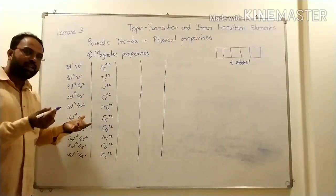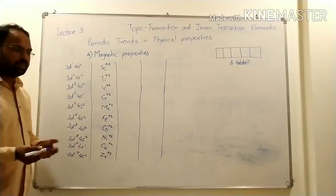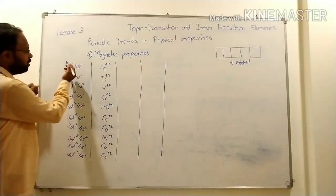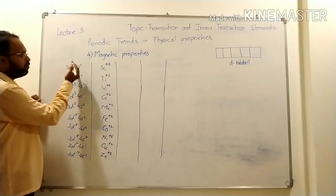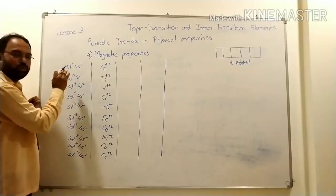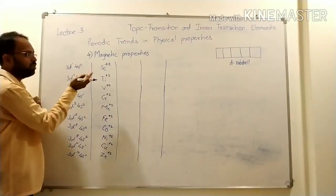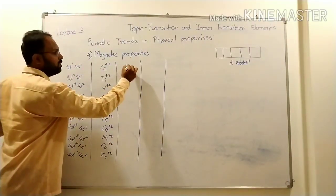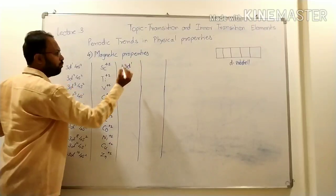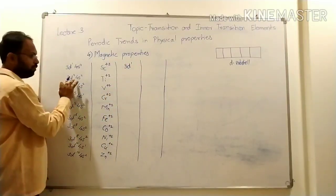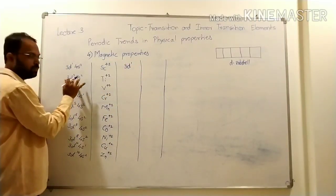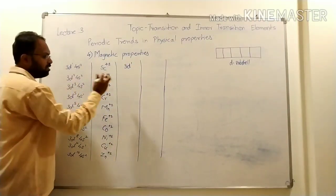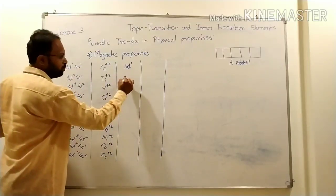The remaining electronic configuration of scandium is: from 3D1, 4S2, two electrons removed from 4S, so remaining is 3D1. For titanium, two electrons from 4S are removed, leaving 3D2.